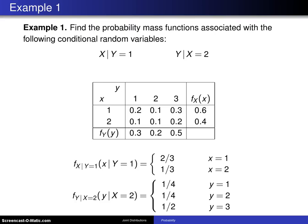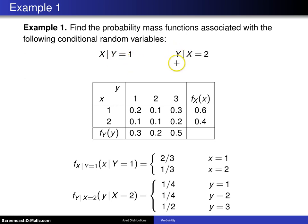This example considers a conditional distribution for discrete random variables. The next example considers a conditional distribution for continuous random variables. Find the probability mass functions associated with the following conditional random variables: the random variable X given Y equals 1, and the distribution of Y given X is equal to 2.